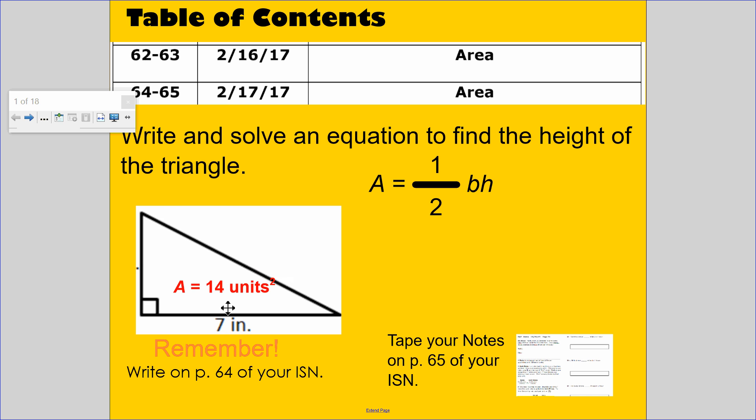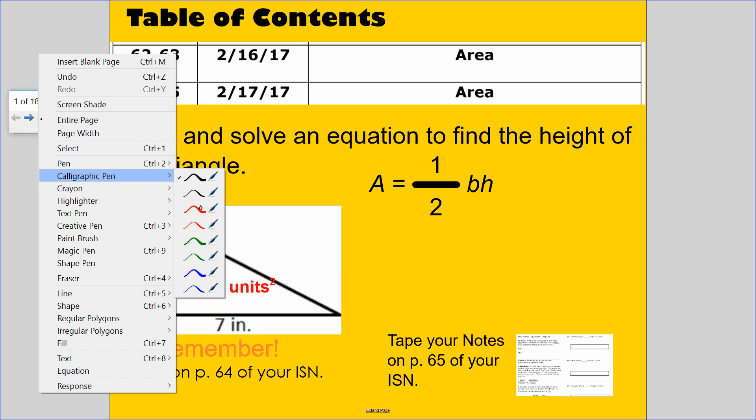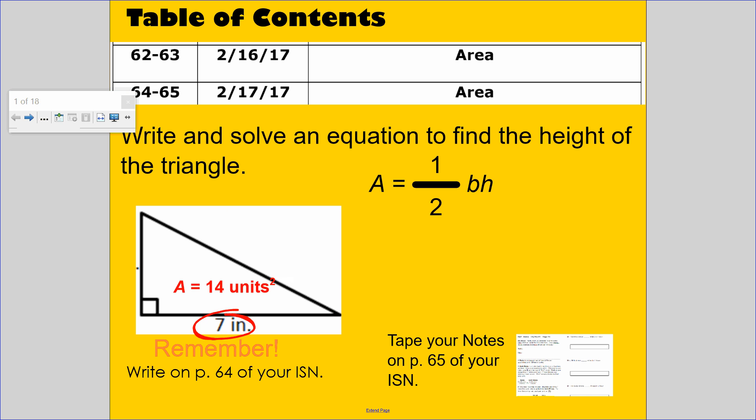We know that the area formula is half times base times height. The base is 7, we don't know the height, and we know the area is 14. So I substitute the area with 14, the base is 7, the height we do not know at this time. So what is half of 7? 3.5, or 3 and a half times height.